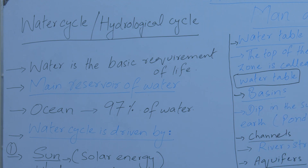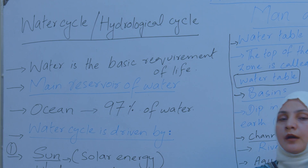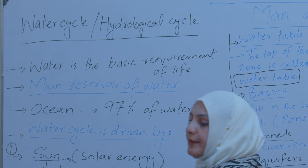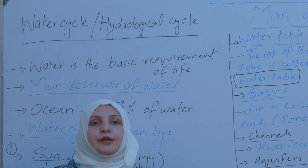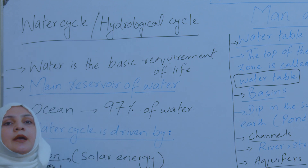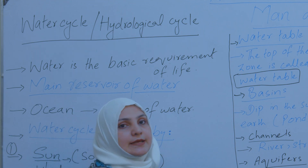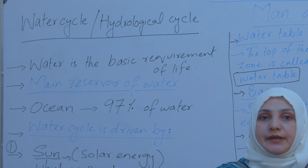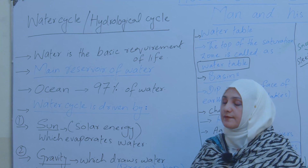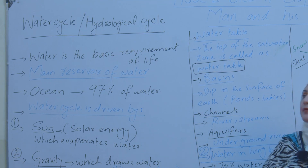As we all know, water is the basic requirement of life. Every living organism — whether we talk about plants, animals, human beings, or microorganisms — depends upon water. Without water, life is not possible. It is impossible to survive. So that's why water is a very, very important component of our environment.